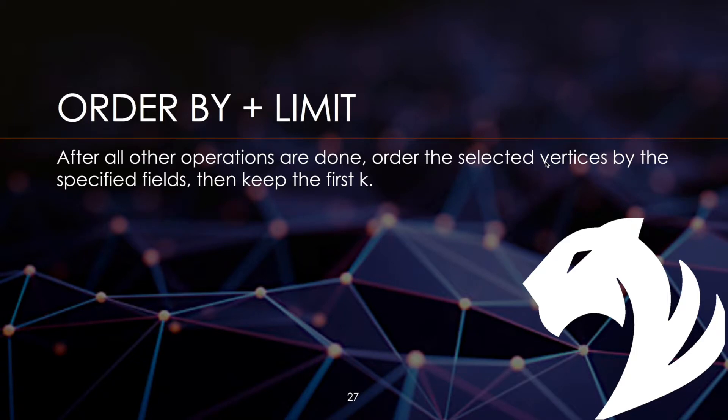The last two clauses that allow us to trim data and even further remove any unnecessary data are the ORDER BY and LIMIT clauses. ORDER BY simply organizes the data by descending or ascending order for a selected accumulator or attribute. The LIMIT clause simply limits the number of results that are returned.